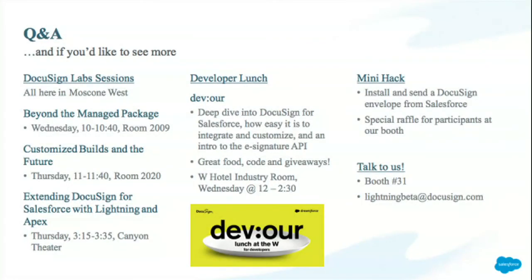Q&A. We have a lot of sessions, and we also have a booth at booth number 31, just right over there. If you have any questions, you can email us at lightning-beta@docusign.com, or you can just ask me right now. Does anybody have any questions? Thanks a lot.